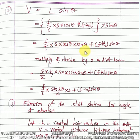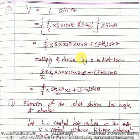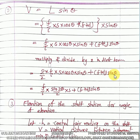Similarly for V equals L·sin theta, substituting L: V equals (f/i)·S·cos theta·sin theta plus (f+d)·sin theta. Multiplying and dividing the first term by 2: V equals (f/i)·S·sin 2theta/2 plus (f+d)·sin theta.